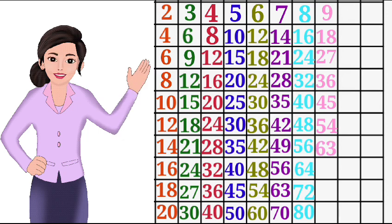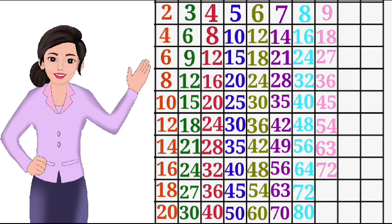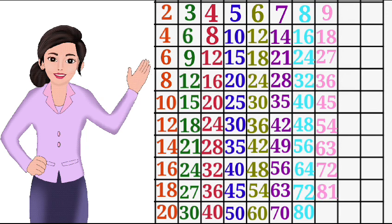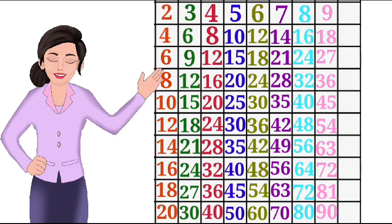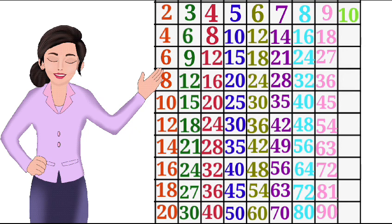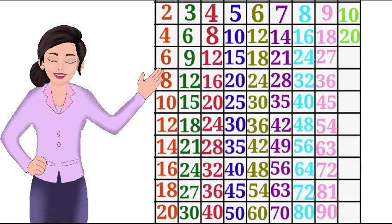9 7s are 63, 9 8s are 72, 9 9s are 81, 9 10s are 90. 10 1s are 10, 10 2s are 20, 10 3s are 30.